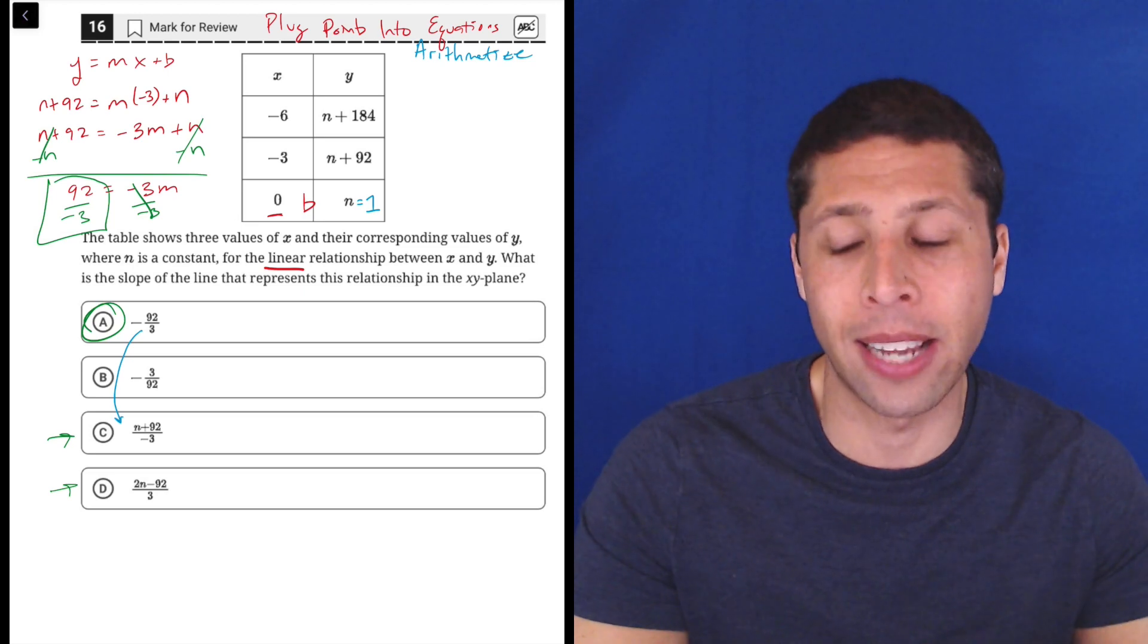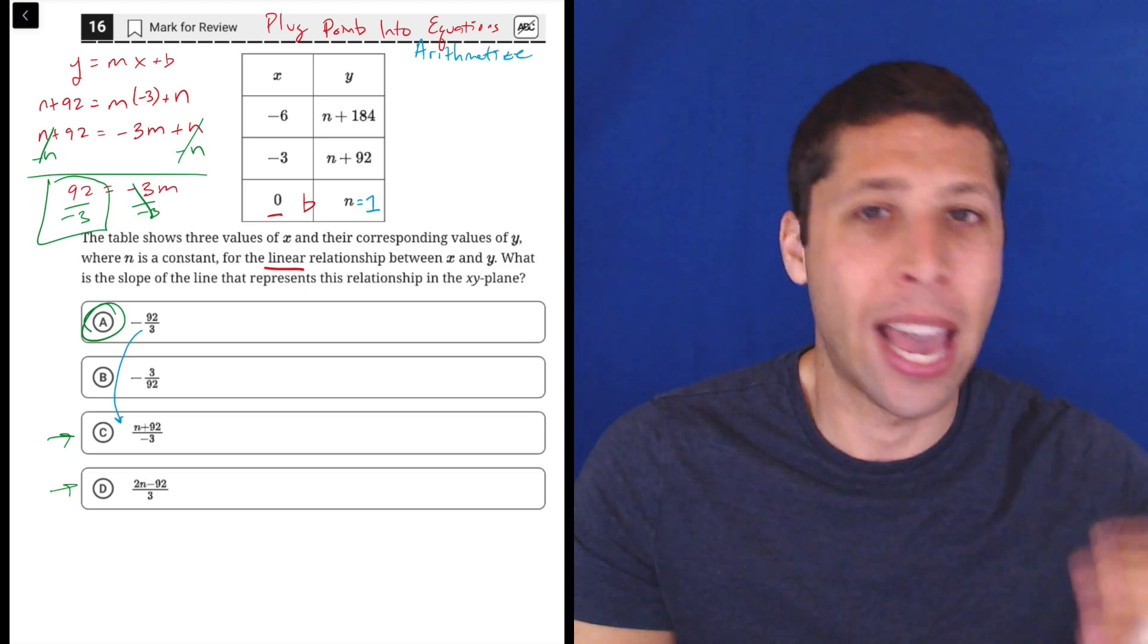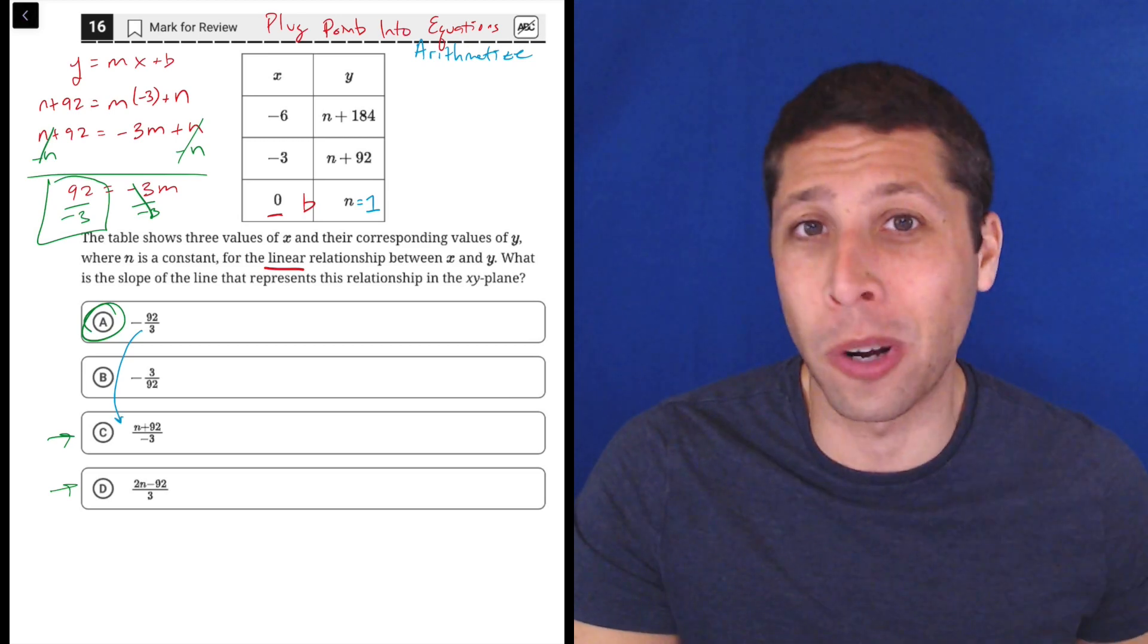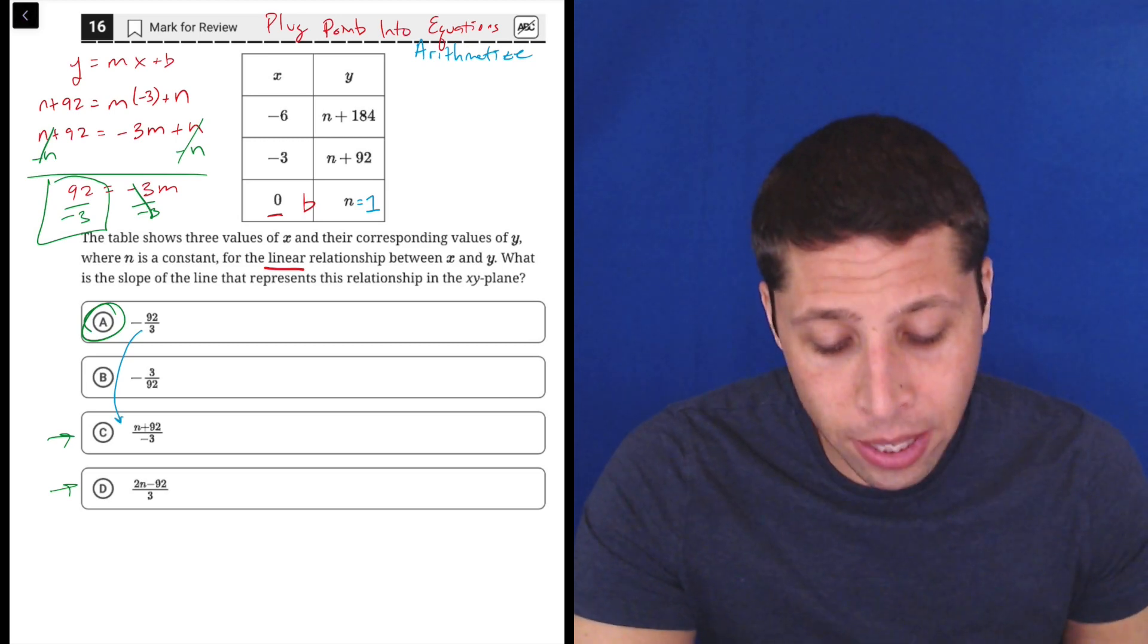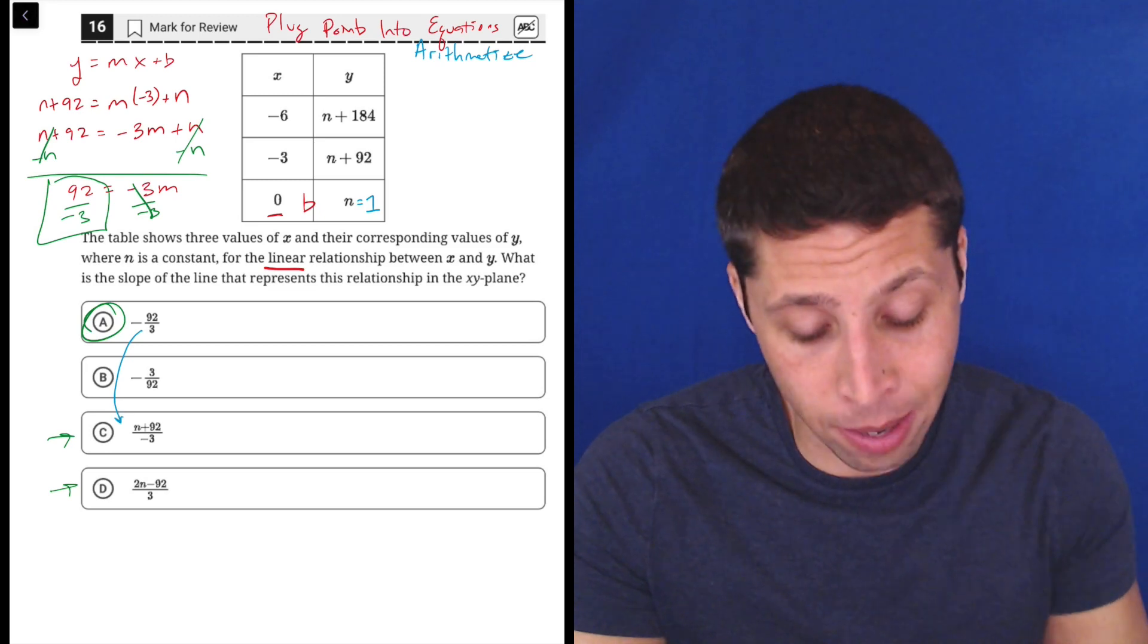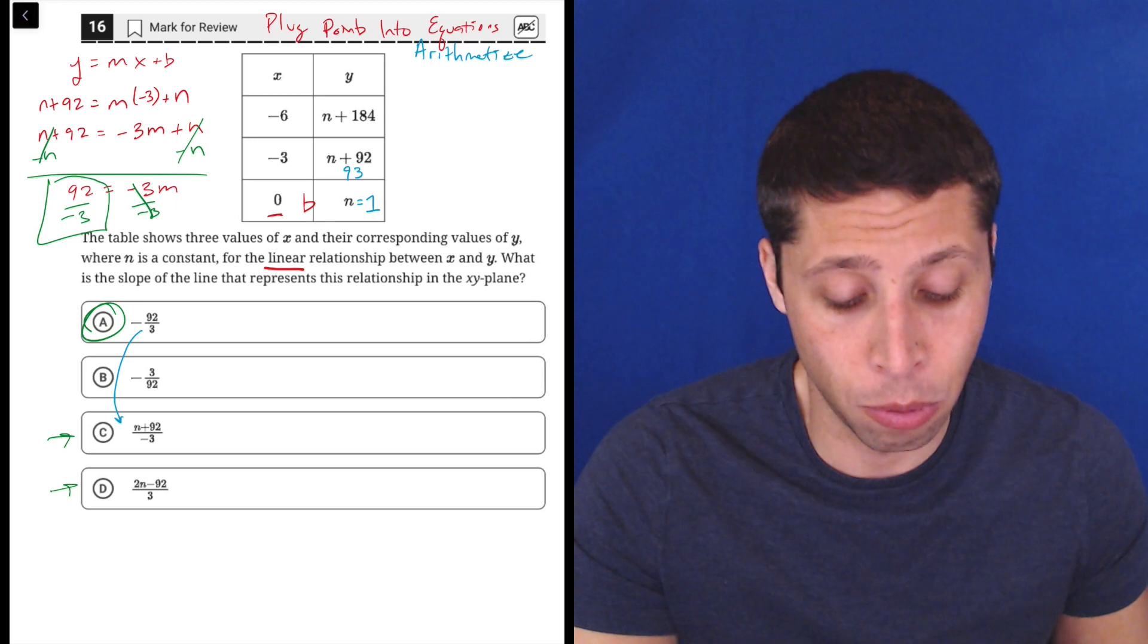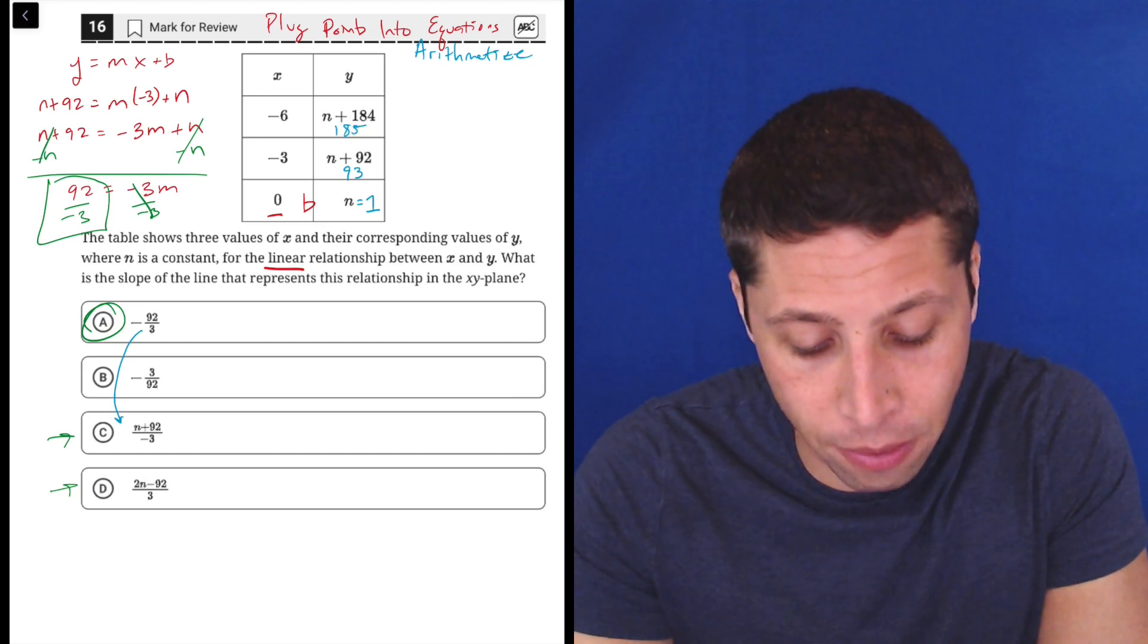If that's confusing, don't worry about it. As you get more comfortable to arithmetize, you will start to think ahead a little bit about which numbers are good. But if you're confused, then just 0s and 1s are the best way to go. So in this case, if I made N 1, then this point here would be 93. N plus 92 is 1 plus 92, which is 93. And so this would be 185. Now I have points that are much more normal.